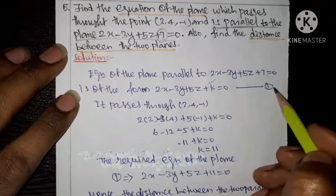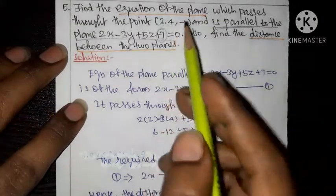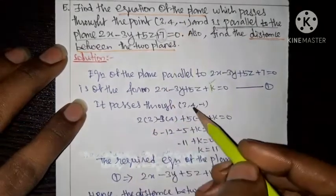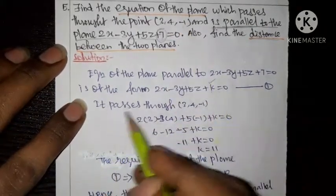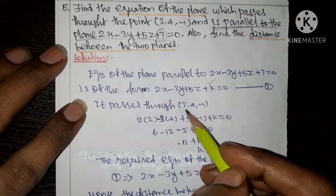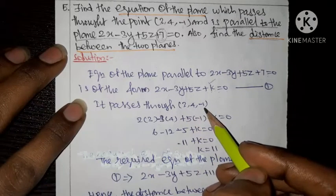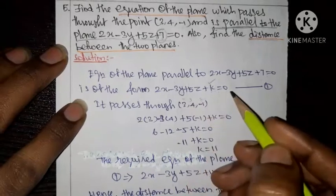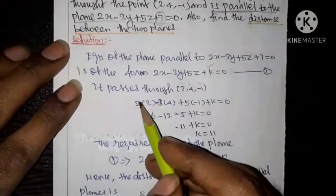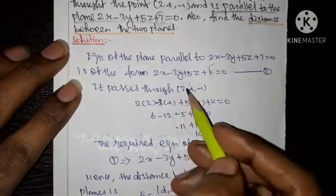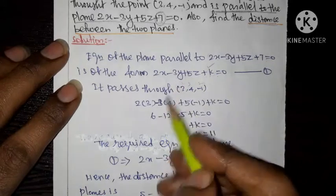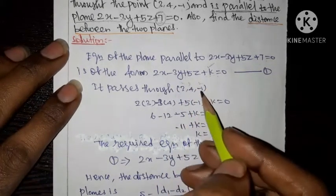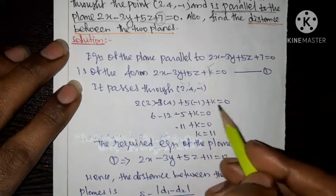Since this plane passes through the point (3, 4, -1), we substitute x equal to 3, y equal to 4, z equal to -1 into the equation 2x minus 3y plus 5z plus k equal to 0.